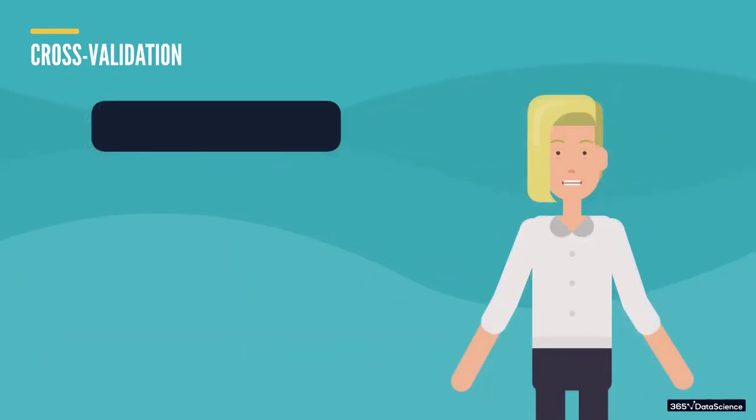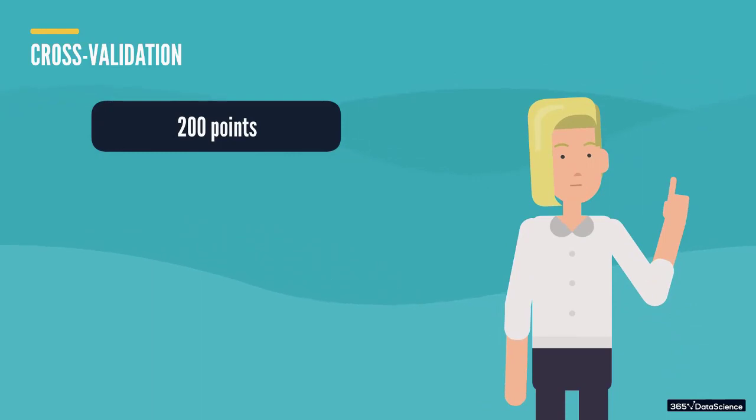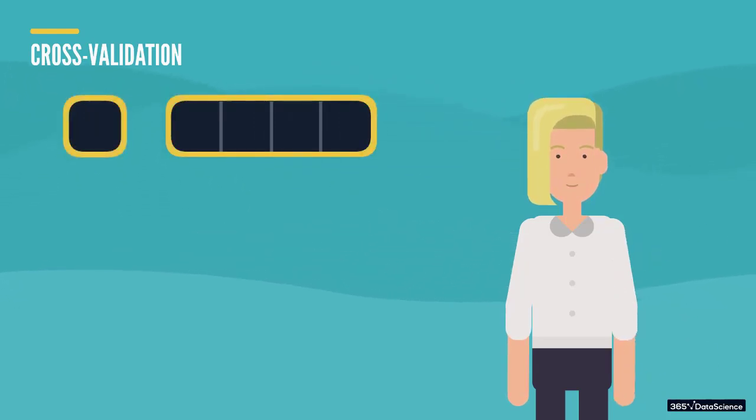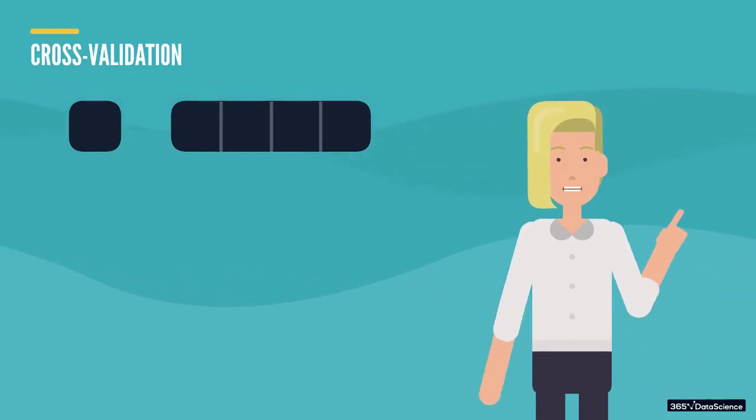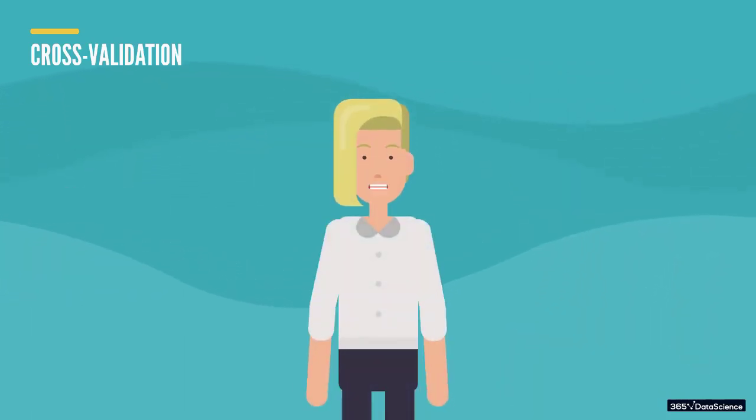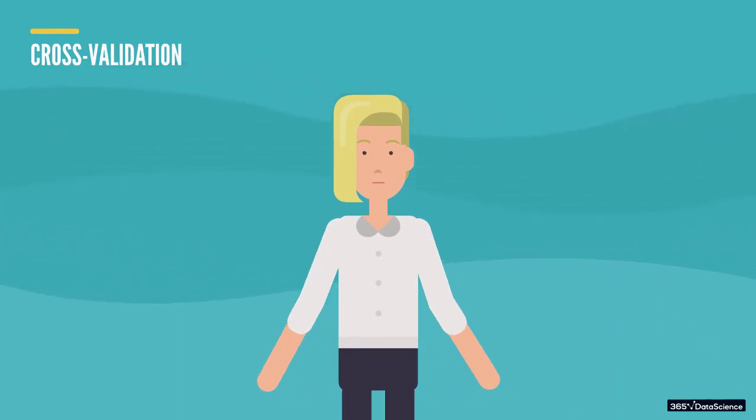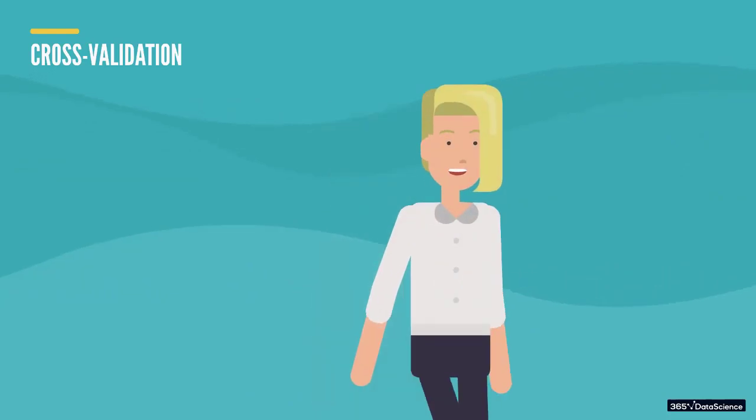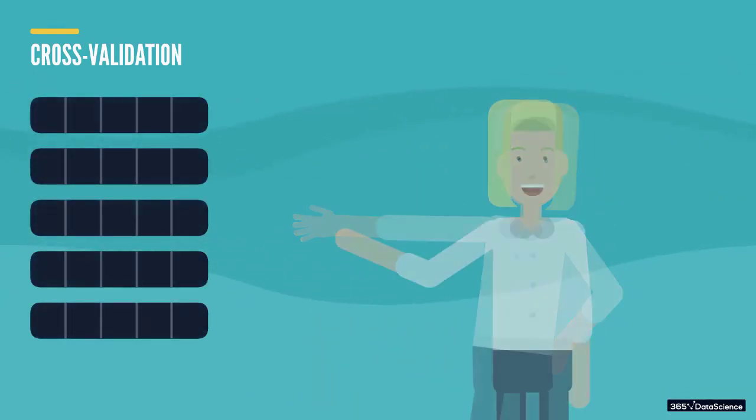Say we have a dataset of 200 observations. Now we can split the data into five equal parts and then divide it into two datasets. One containing four parts and the other the remaining fifth part. In essence, we partition the data into a new training and validation set. So we train a model on the four parts and evaluate its performance on the fifth. What's great is that we can split the data in many different ways using this approach. This effectively means that we're not only creating one new pair of training and validation sets, but rather five new sets.